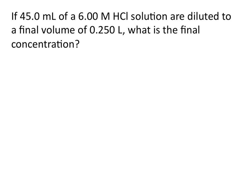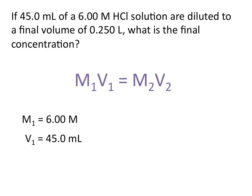Let's try another example. If 45 milliliters of a 6 molar HCl solution are diluted to a final volume of 0.250 liters, what is the final concentration? Again, we will use the equation M1V1 equals M2V2. It's helpful to always write down the information you're given. The molarity of our first solution is 6 molar, and the volume we have is 45 milliliters. We're asked what the concentration would be when we dilute to 0.250 liters, so our second molarity is unknown — that's the value we'll be solving for.